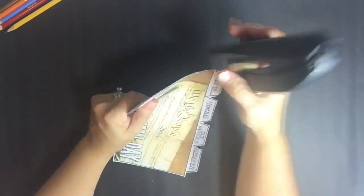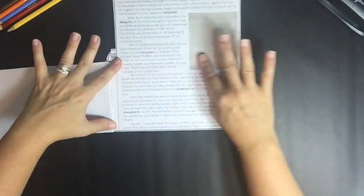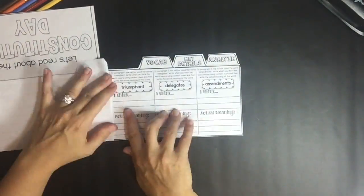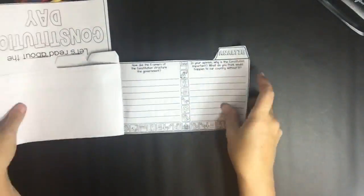They'll work on three vocabulary words from the text. They'll focus on key details and write questions on it, and then they'll analyze the text and answer two questions.